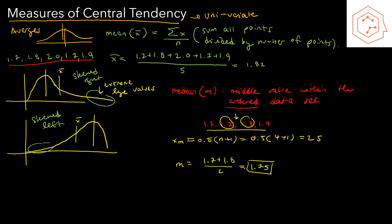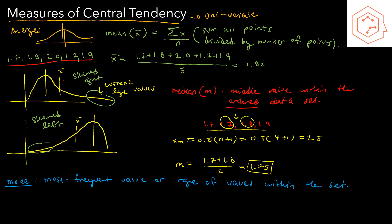The last measure of central tendency is called the mode, which doesn't have a specific notation — most people just write 'mode'. The mode is the most frequent value or range of values within a set. In our data set, every value occurs once except 1.7, which occurs twice. So the frequency of 1.7 is greater than all other points, making 1.7 the mode.